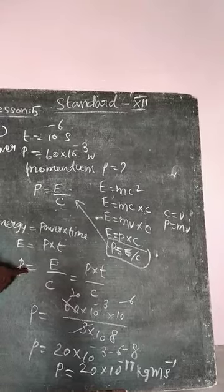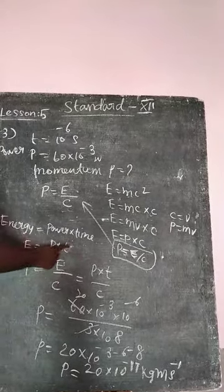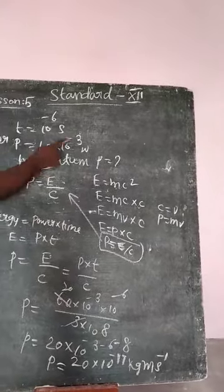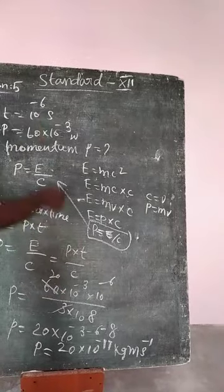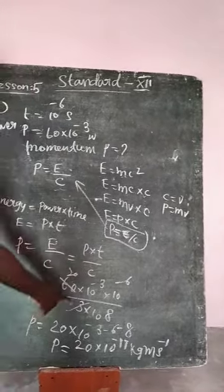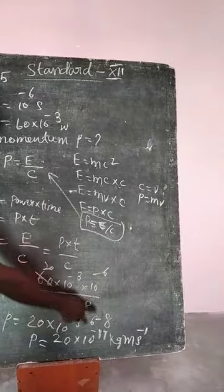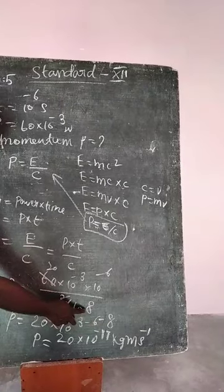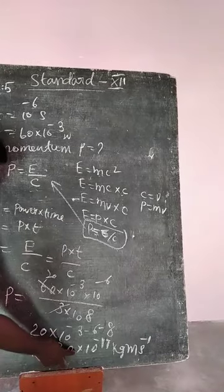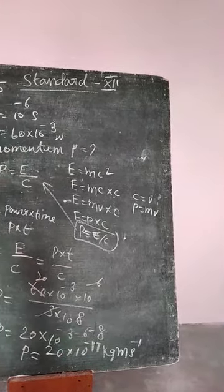Momentum P equals energy by speed of light, E equals P into T by speed of light. P equals power 60 times 10 power minus 3, time 10 power minus 6, speed of light 3 times 10 power 8. Momentum P equals 20 times 10 power minus 17 kilogram meter per second.